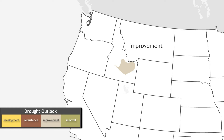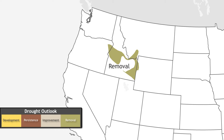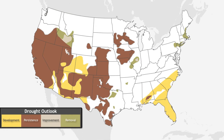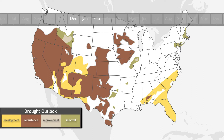Drought removal represents areas likely to be declassified as being in an official drought category. The fourth and final map category indicates areas where experts agree drought will likely develop.